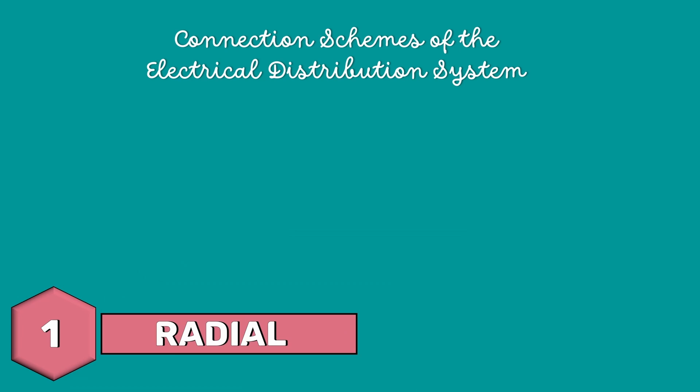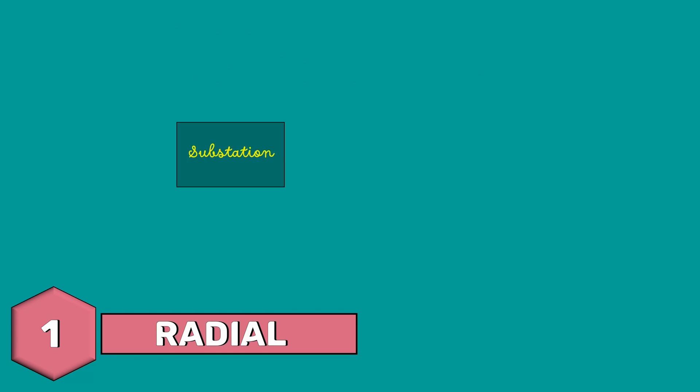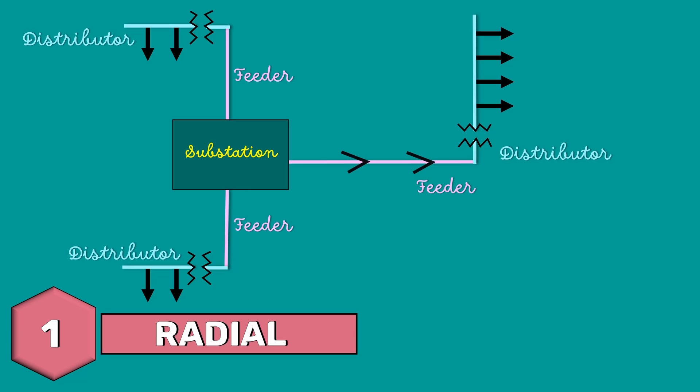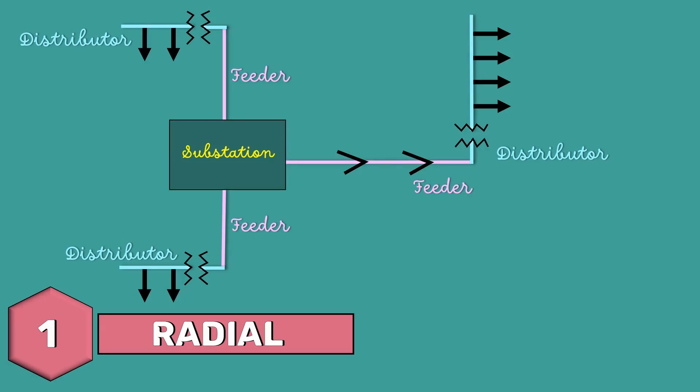Let's first start with the radial system. Here, separate feeders radiate from a single substation and feed the distributors at one end only. This is the simplest and cheapest network for an electrical grid. This radial system is employed only when the power is generated at very low voltage and the substation is located at the center of the load. This serves light and medium density load areas.